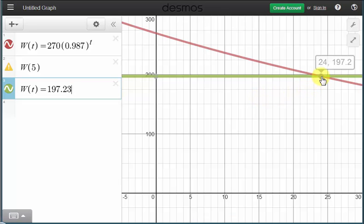the coordinates automatically show even though it is rounding the function value or the weight of 197.23. But notice how the t-coordinate is 24, which means it took 24 weeks to weigh 197.23 pounds. Let's go back and record our information.